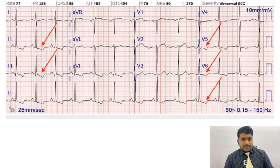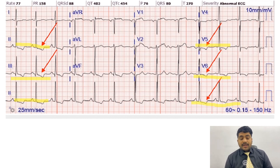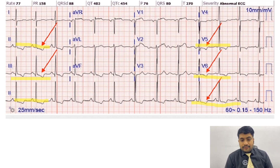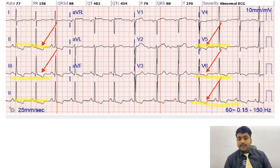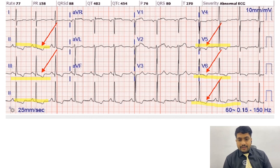In this ECG we have widespread T wave inversions across multiple leads. In the case of ST segment depression or T wave inversions, you should also look for a prominent R wave in that lead. If you go back and check all the ECGs just discussed, you will see that whenever there is ST segment depression, the R wave is more prominent than the S wave — meaning the ratio of R to S is greater than one. That is our prominent R wave.